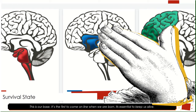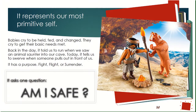Way at the bottom, the survival state is our base — the first one to come online when we're born. While it's the least desirable place to be, it's also really, really important. It represents our most primitive self. Babies cry to be held, fed, and changed — they cry to get their basic needs met. Babies go into their survival state because they don't have the words or any other ability to say, hey, I need help here. And way back in the day, it told us to run when we saw an animal saunter into our cave.